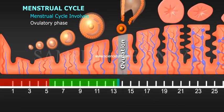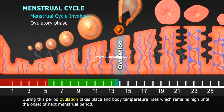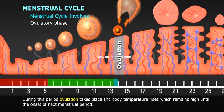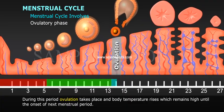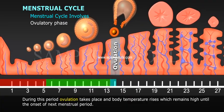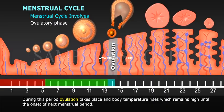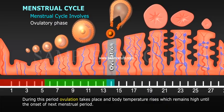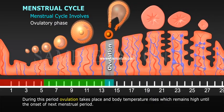Ovulatory phase: During this period, ovulation takes place and body temperature rises, which remains high until the onset of the next menstrual period.